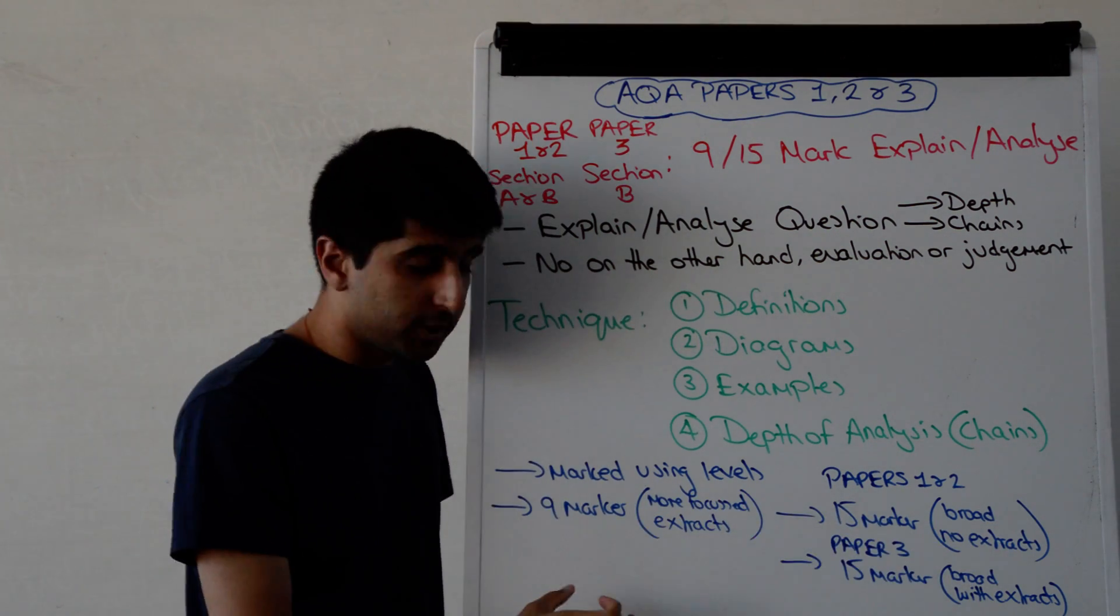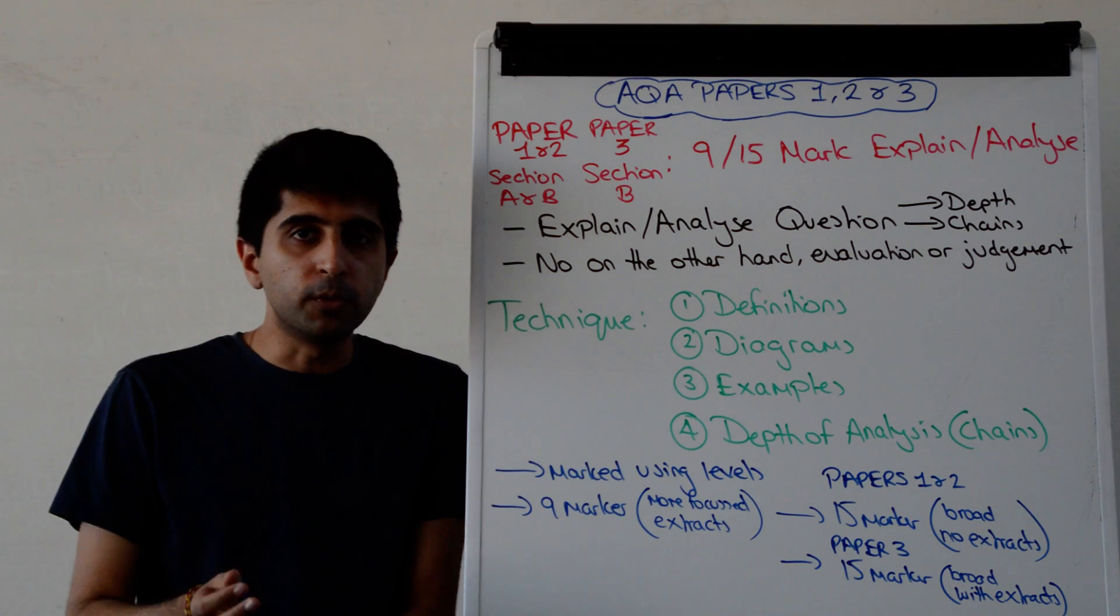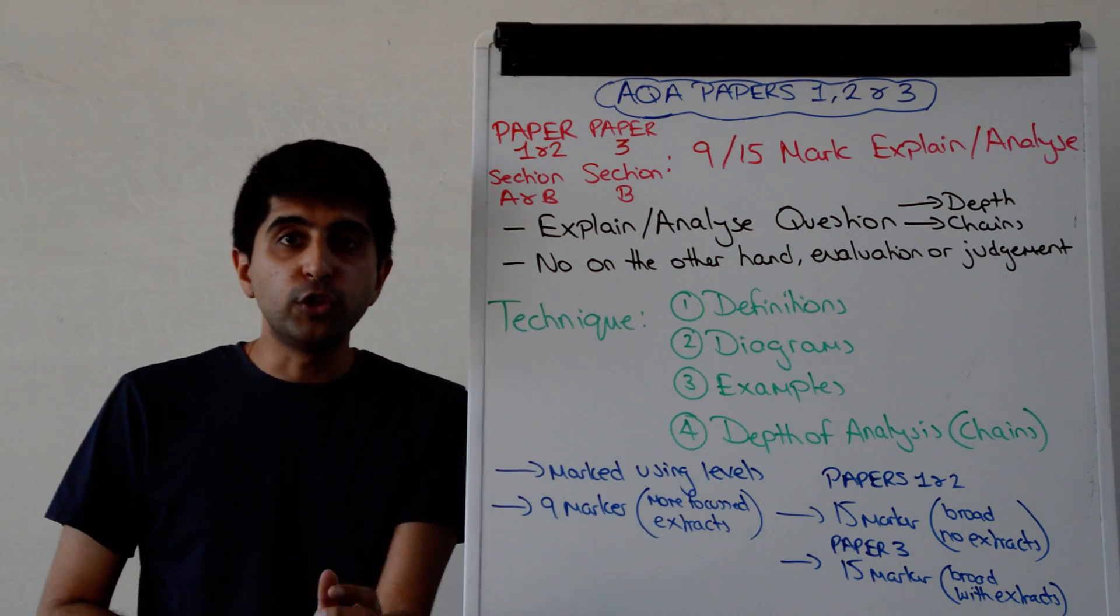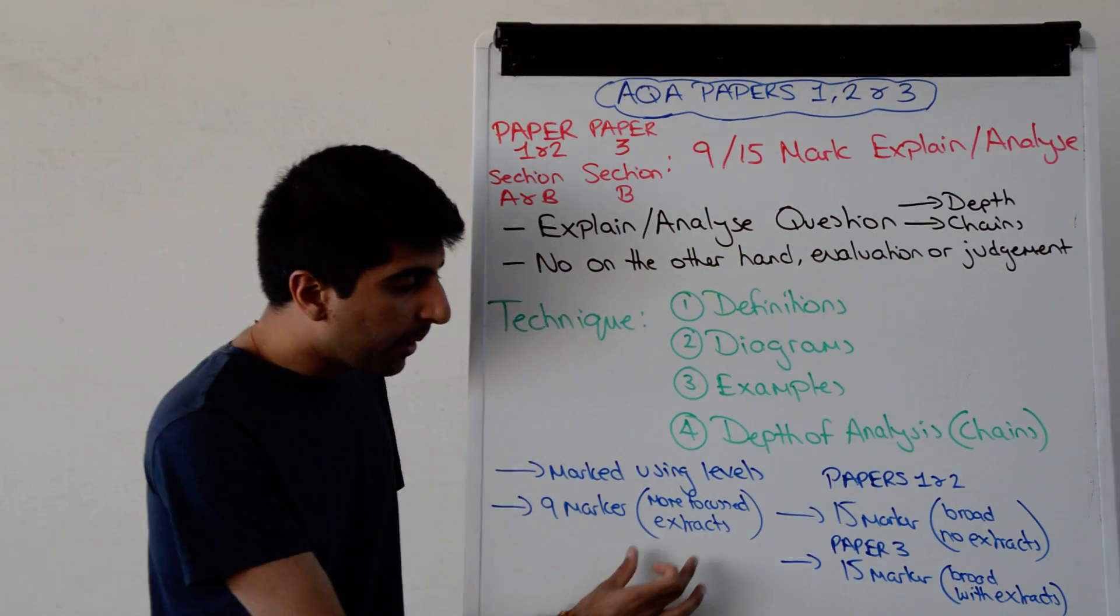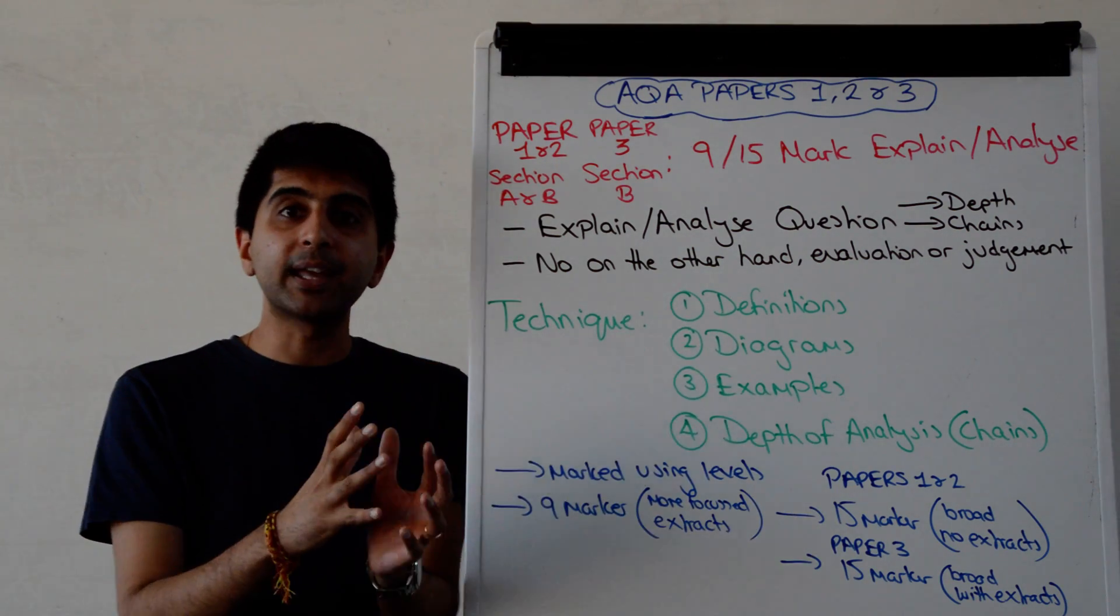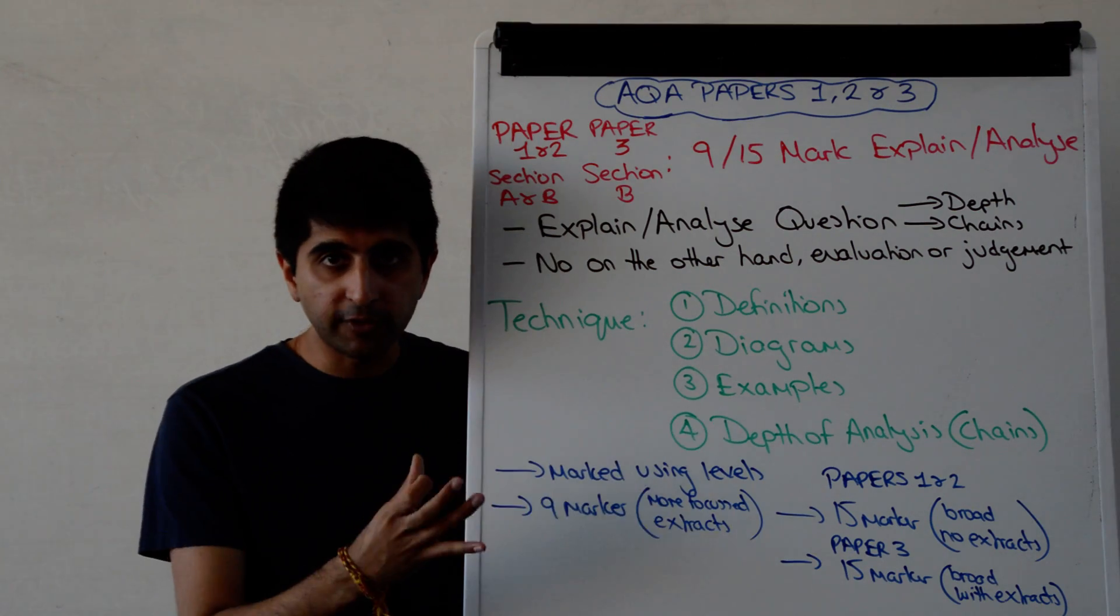What is the difference, then, between 9 markers and 15 markers? Well, the 9 marker in Paper 1 and Paper 2 will be very narrow-focused. It will be very specific as to what you need to be talking about, what you need to be analysing. So very narrow-focused there. But you'll have extracts to help you with the application. So take the application from the extracts that are there. You've also got less time for the 9 marker, 12 minutes to do this.